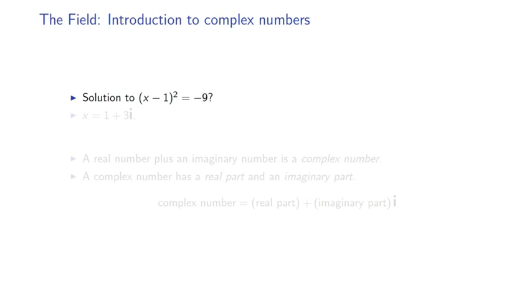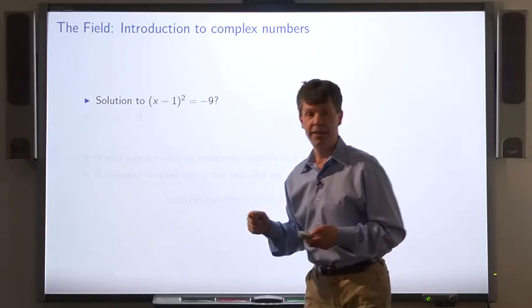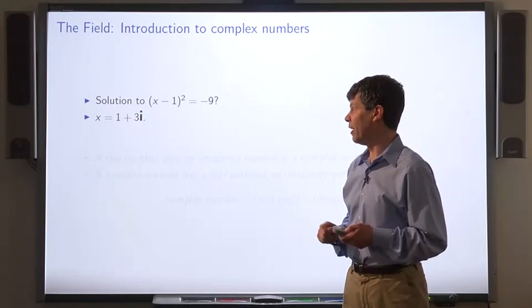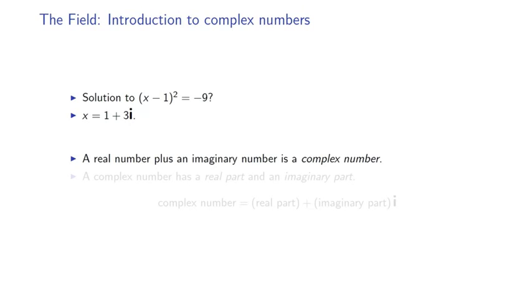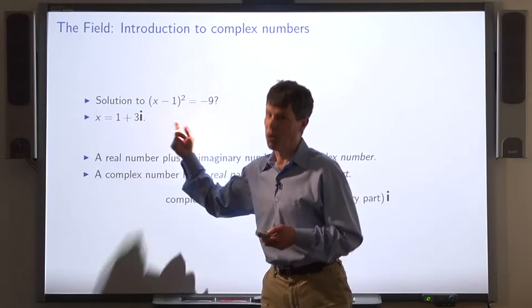You can use the imaginary numbers to solve other equations. x minus 1 quantity squared equals minus 9 has the solution 1 plus 3 times i. You add a real number to an imaginary number, you get a complex number. A complex number has a real part and an imaginary part. The complex number is a real part plus the imaginary part times i. So both real part and imaginary part are real numbers.